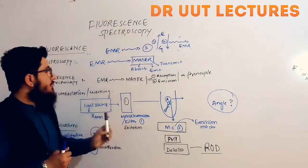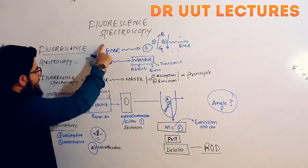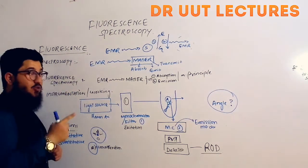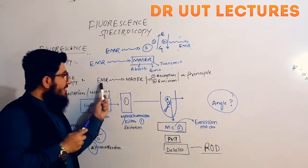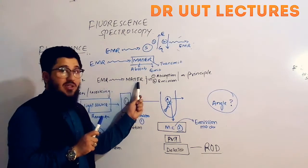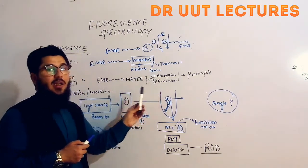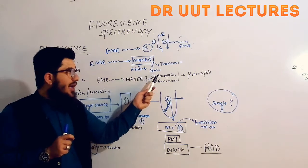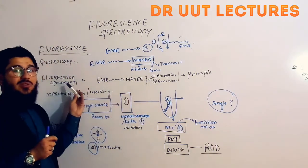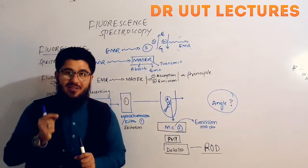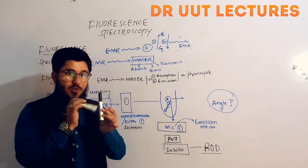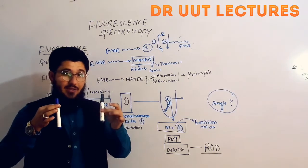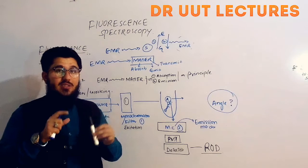In fluorescence spectroscopy, we combine both steps. Fluorescence spectroscopy is a kind of spectroscopy in which electromagnetic radiations are targeted on the matter, and this matter will absorb and emit the electromagnetic radiation. Such a spectroscopy — in which matter is both absorbing and emitting electromagnetic radiation — is known as fluorescence spectroscopy.